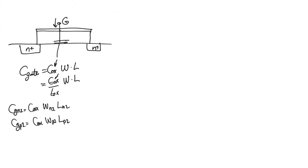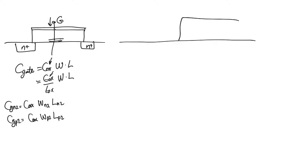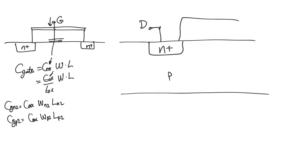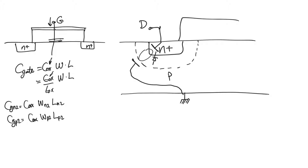Moving on to the drain capacitances C_DN1 and C_DP1: looking at the drain of the transistor, there exists a PN junction between the drain and the body, in both NMOS and PMOS. This PN junction is always reverse biased — the body is connected to ground for NMOS and to supply for PMOS — creating a wide depletion region. This depletion region acts as an insulator between the conducting drain and body, forming a capacitance.